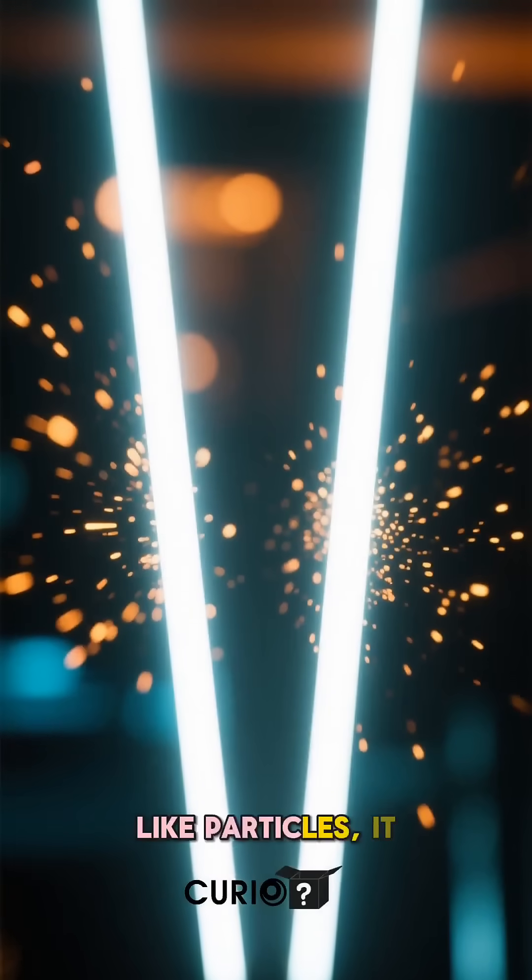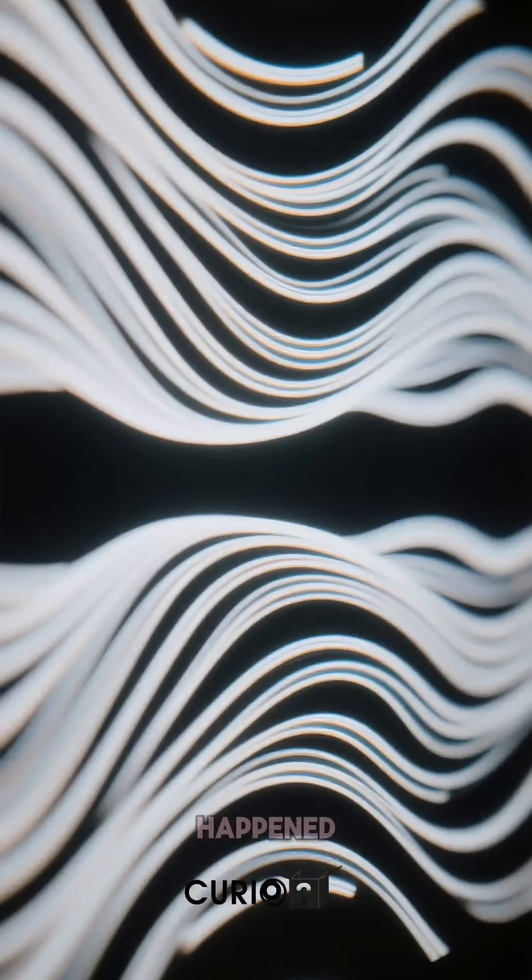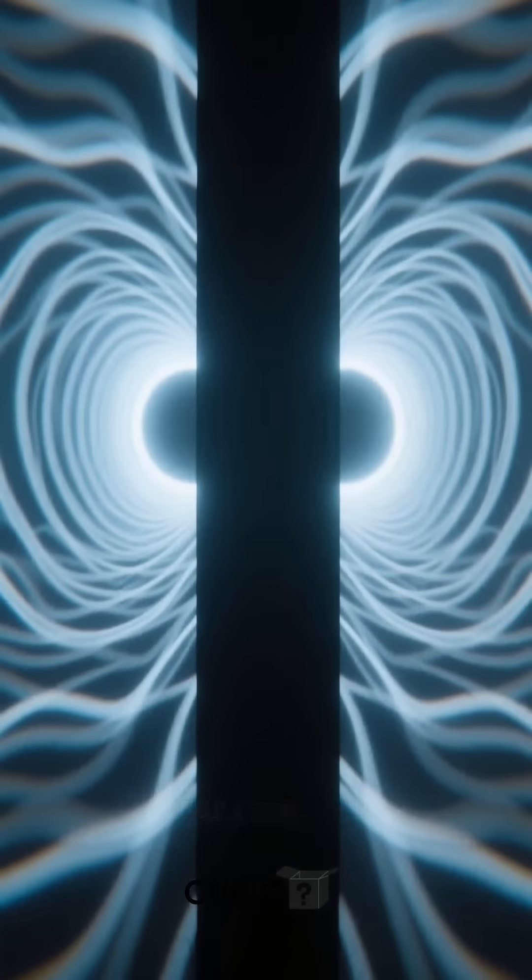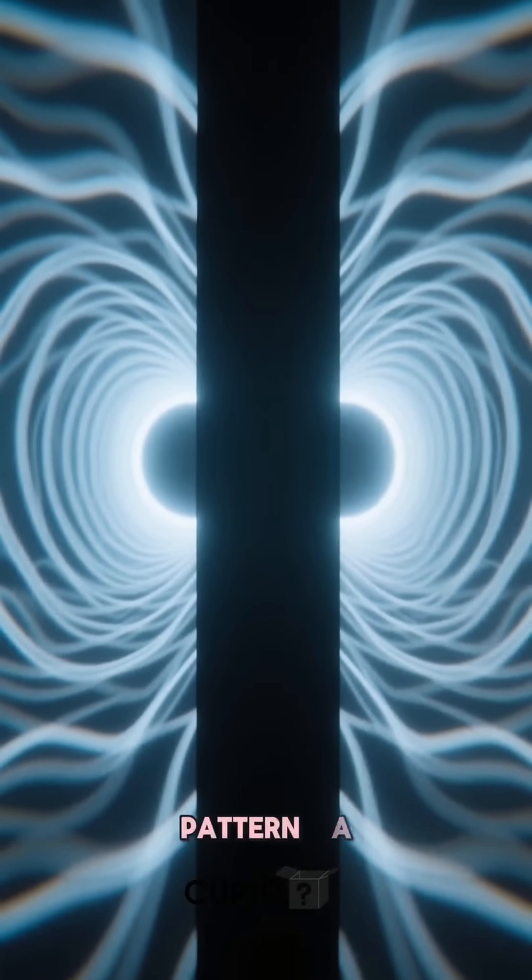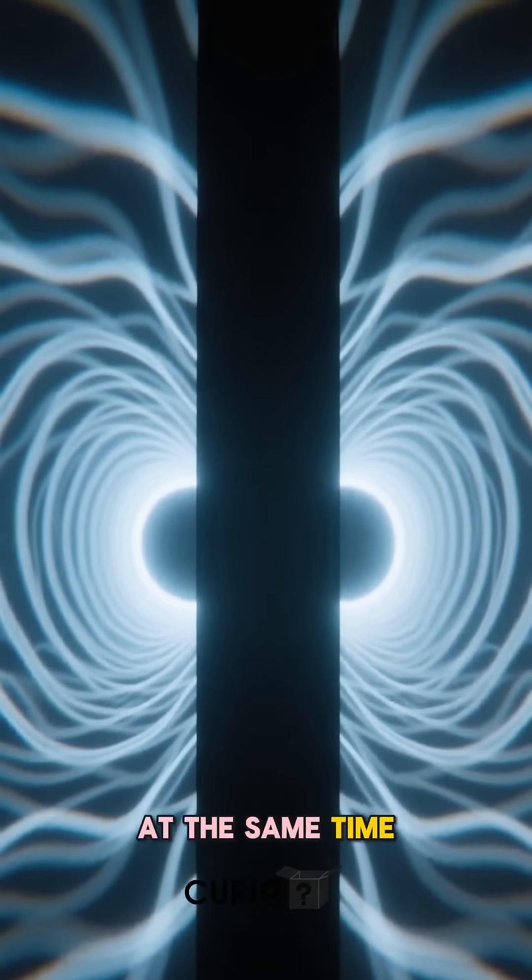If light behaved like particles, it should form two clear lines on the screen. But that's not what happened. Instead, the photons created an interference pattern, a wave-like ripple, as if each particle somehow traveled through both slits at the same time.